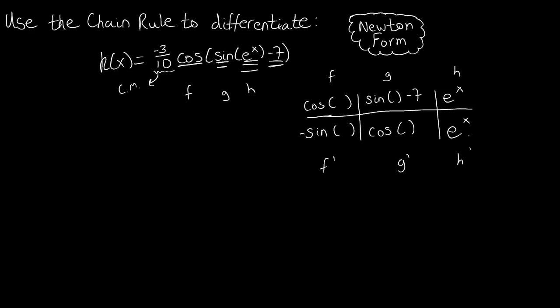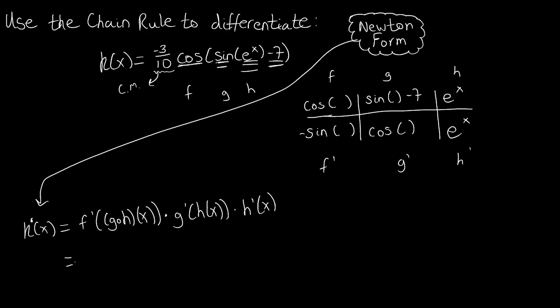Now we finished our table and we need to worry about what our answer is going to look like. According to Newton form, what we're going to have is, we defined this function earlier as k(x). So what our answer is going to look like is we are going to have f' of g composed with h of x, times g' of h of x, times h' of x. Or similarly, we have f' composed with g composed with h of x, times g' composed with h of x, times h' of x.